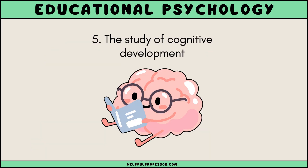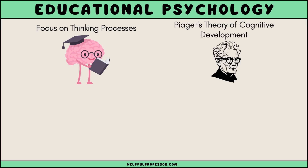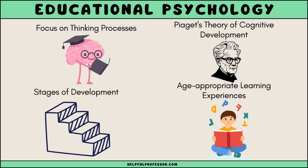Cognitive development theories are also central to educational psychology. These theories guide understanding of how thinking processes evolve and how these processes influence learning. Jean Piaget's theory of cognitive development, for example, provides insights into how children perceive the world at different stages of their development. According to Piaget, children move through four stages of cognitive development, each characterized by changes in understanding and abilities. Teachers can use this knowledge to create age-appropriate learning experiences that align with the cognitive abilities of their students.